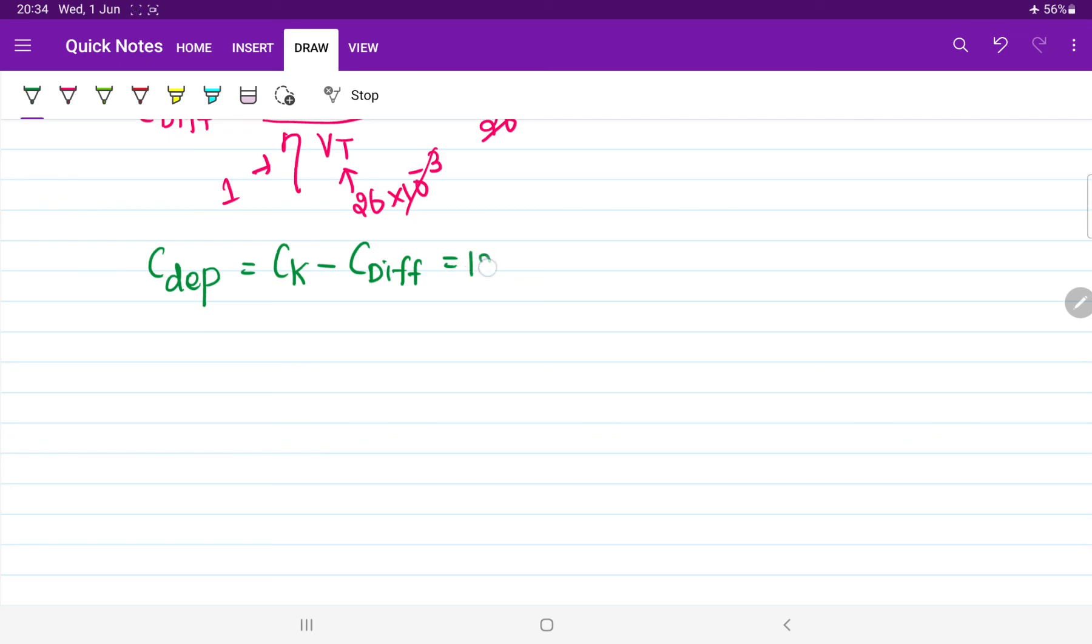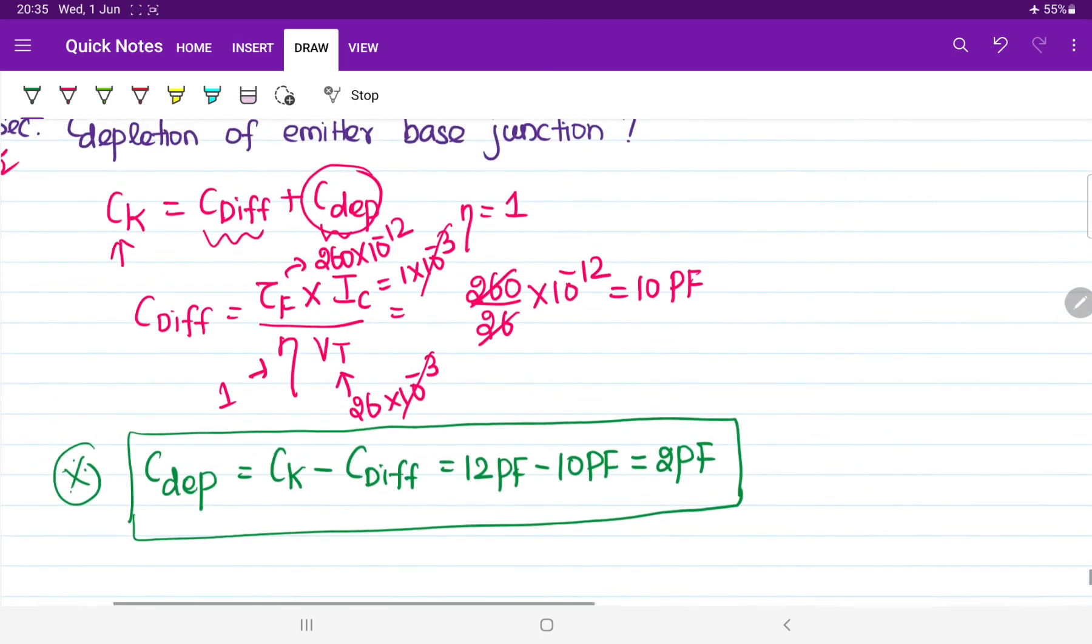By substituting the overall capacitance, how much they have given? 12 picofarad. Minus diffusion capacitance. We have explored that 10 picofarad. By subtracting these two, I can say that depletion capacitance value will become 2 picofarad. I hope you all understood how to calculate the value of this depletion capacitance easily. This is all for this lecture. Remaining things we will see in the next class. Thank you all.